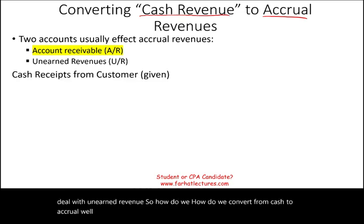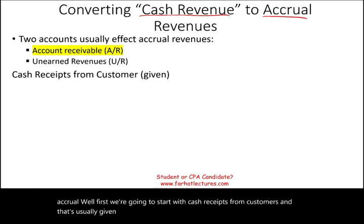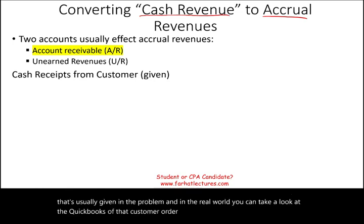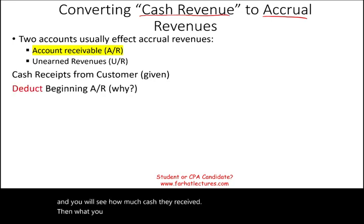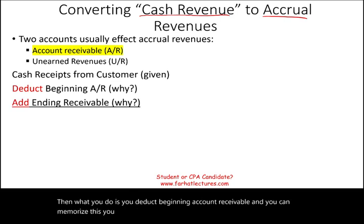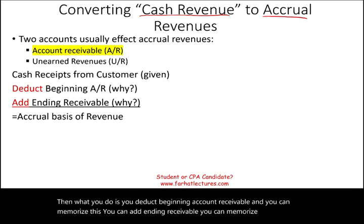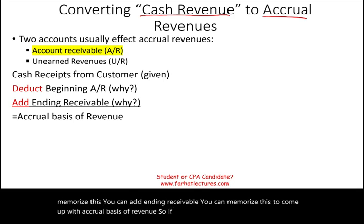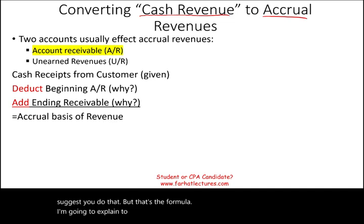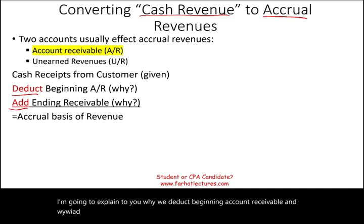How do we convert from cash to accrual? We start with cash receipts from customers — that's usually given in the problem. In the real world, you look at the QuickBooks records or the bank transactions to see how much cash they received. Then you deduct beginning accounts receivable and add ending receivable to come up with accrual basis revenue. You can memorize this formula, though I don't suggest it — it's better to understand why.